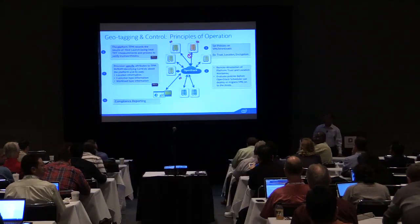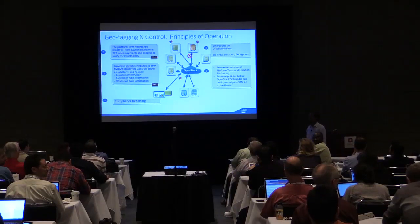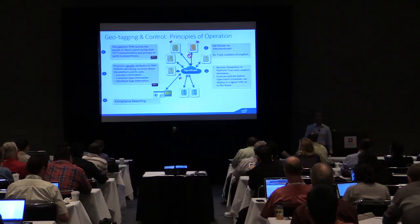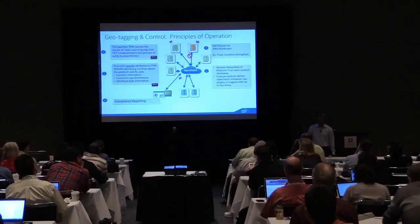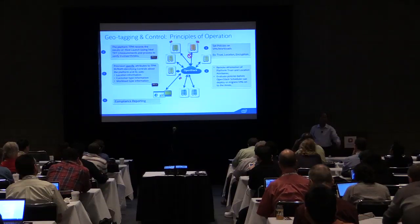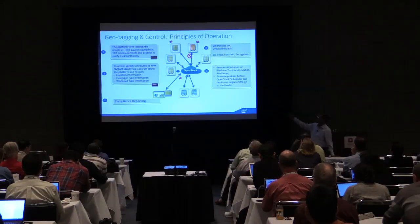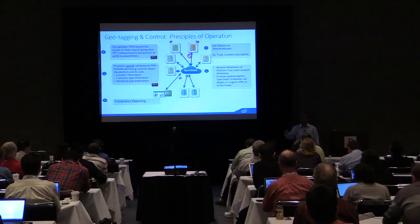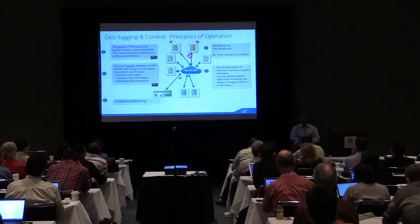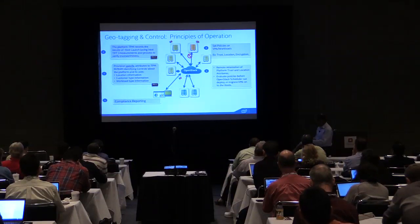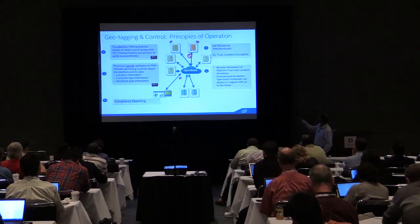How do you provision the geotag into NVRAM? It's a standard provisioning tool that Intel provides, or an ISV, or possibly open source. Once the launch process is done, you define policies for your VMs and workloads—where these workloads can reside, cannot reside, and where they can migrate. A basic trust policy says this VM only runs on TXT-trusted hardware. A location policy says this VM is a finance VM and only runs on finance clusters. Or: this is a regulated workload, so it can only run within continental US.